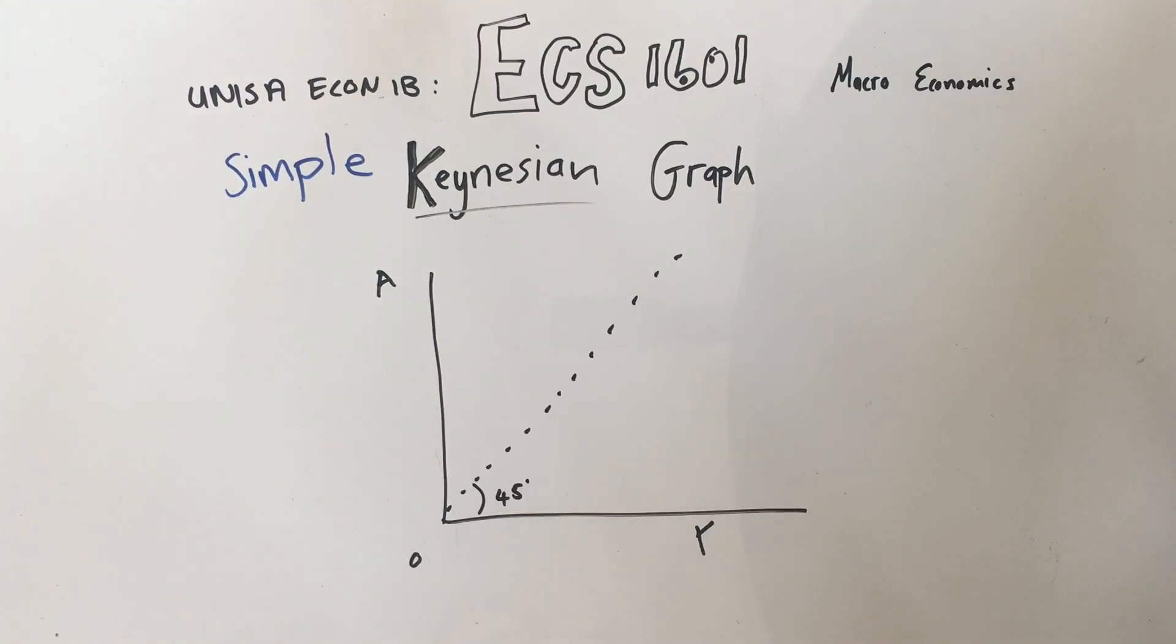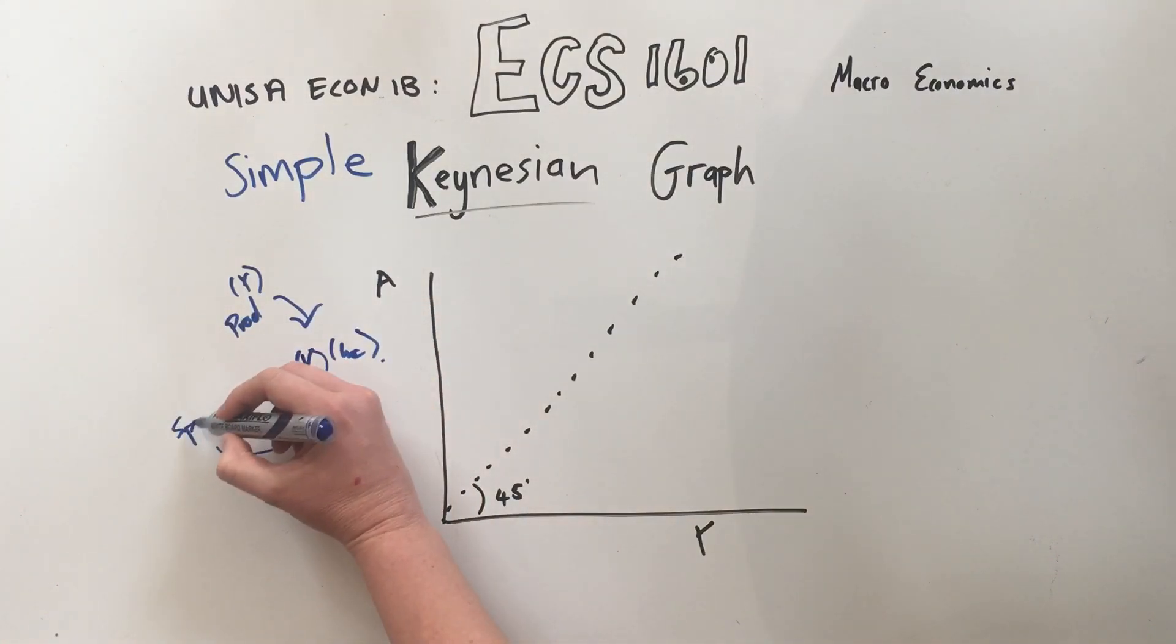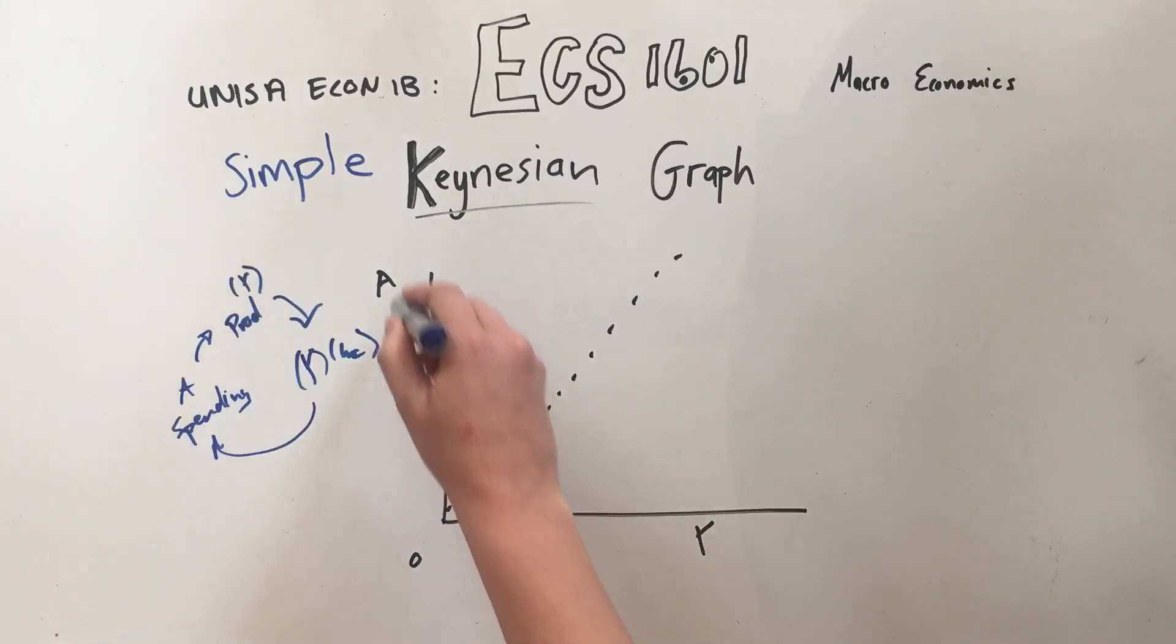What this means is the simple part. We had the business cycle or the circular flow of income and spending, and we said that production, also known as Y, when this production happens there's income. So we have production which is Y, and then that equals income which is also Y, which equals spending which was A, it was not Y.